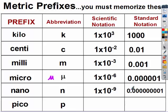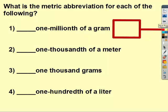And pico is lowercase p, and that's 1 times 10 to the negative 12, or 1 trillionth of what you're talking about. Notice most of the prefixes that we use in chemistry are very small because atoms and molecules are very small. Go ahead and pause the video and figure out which prefix these are referring to.